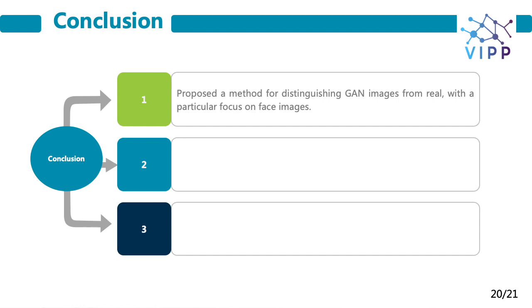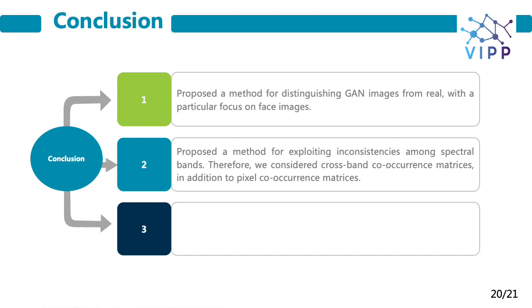We have introduced a CNN method for distinguishing GAN-generated images from real images, with particular focus on sensitive face image detection. The proposed method exploits inconsistencies among spectral bands. Cross-band co-occurrence matrices are used in addition to pixel co-occurrence matrices to train a CNN model to extract discriminative features for the real and GAN classes. The experimental analysis shows good performance and improved robustness against various post-processing compared to the case where only spatial co-occurrences are used, confirming the benefit of looking at relationships among color bands.